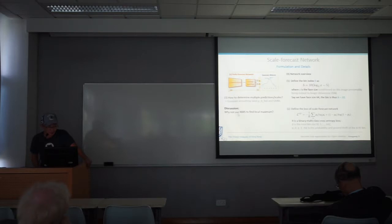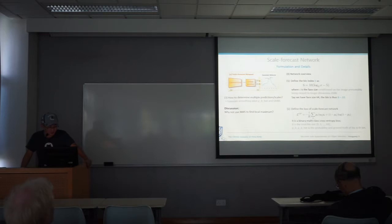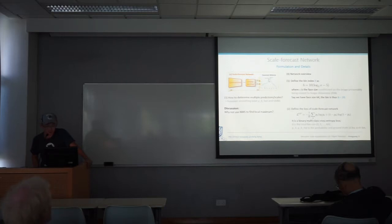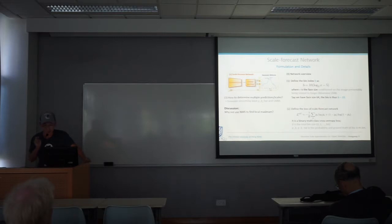One might ask why not use NMS to find local maxima. In detection tasks, NMS finds local maxima given high overlapping scores compared to preceding boxes. But here it's a 1D case — we cannot suppress the second local minimum simply because it has large overlap with a former scale, since these scales are exclusive from each other.